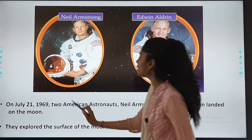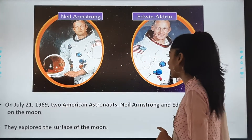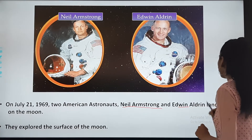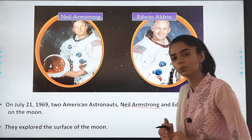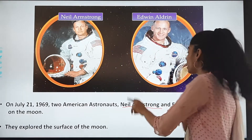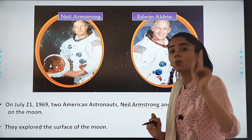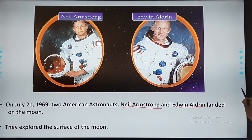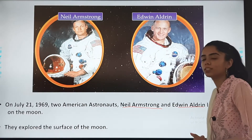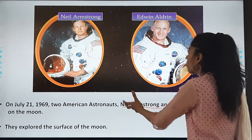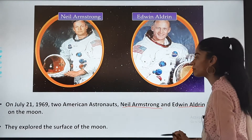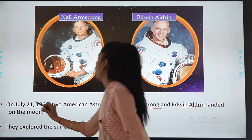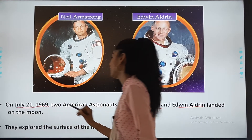On July 21, 1969, two American astronauts, Neil Armstrong and Edwin Aldrin, landed on the moon. They were the first to land on the moon and they explored the surface of the moon. You should remember their names.